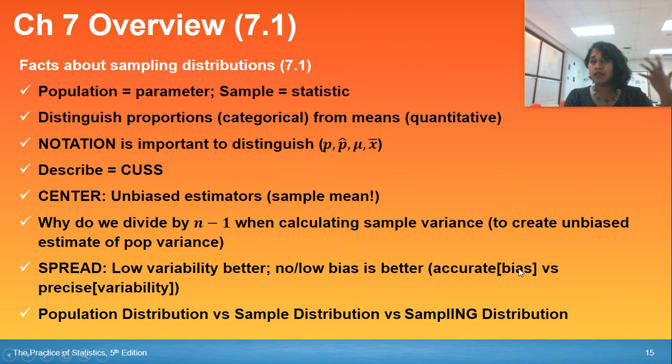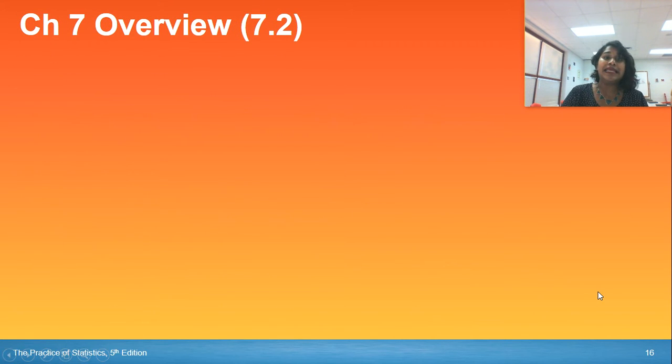Dealing with spread, low variability is better. No bias is better. And finally, those three distinctions: pop distribution, sample distribution, sampling distribution.